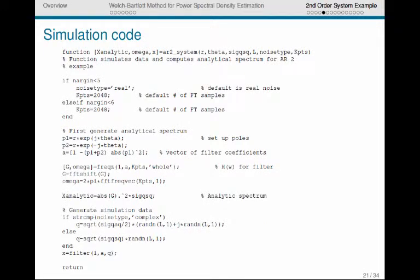So we can simulate that data using MATLAB, and here's a simple function to do that. This function takes as input r, the radius of the poles, and theta, the angle of the poles, and sigma q squared. And we also tell it how many data samples we want and the type of noise, whether it be real or complex. So are we driving this system with real zero-mean Gaussian random variables or complex zero-mean Gaussian random variables? And k points is just telling you how many points of the frequency response to calculate.